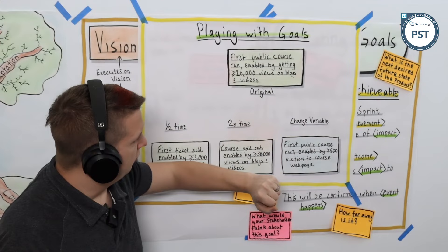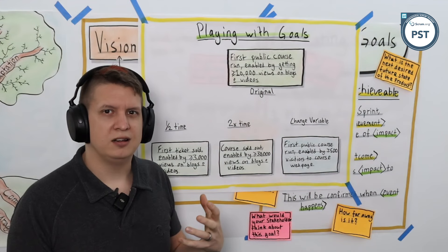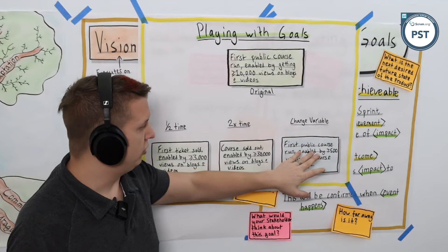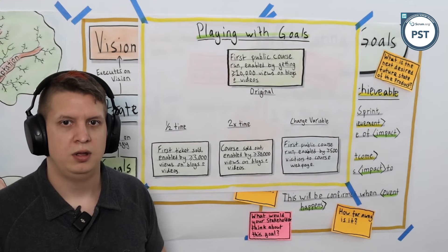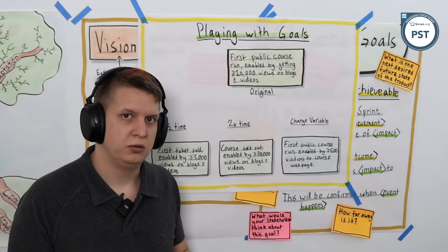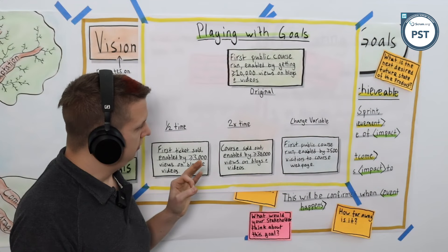And then what if we change the variable? What if we think, okay, well maybe blogs and videos aren't the right thing to be looking at. Maybe they're part of the puzzle, but maybe they're not the thing that's going to really get us to where we need to go. Okay, then let's look at our first public course run, so same scope again, but this time the variable we want to tweak is 500 or more visitors to the course web page. Now what that means is we might not do any blogs or videos according to the goal. We don't need to because what we're trying to do is get visitors to our web page.